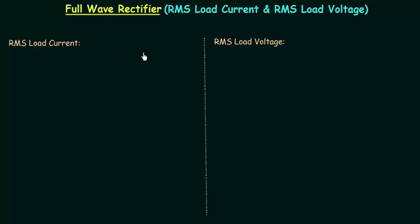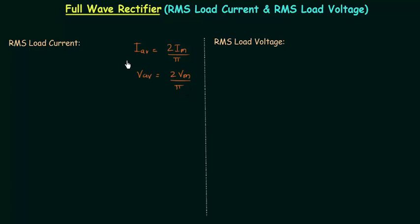In the previous lecture we calculated average load current and average load voltage for a full wave rectifier. Average load current was equal to twice of Im divided by pi, and average load voltage was equal to twice of Vm divided by pi. In this presentation I will calculate RMS load current and RMS load voltage for the full wave rectifier.